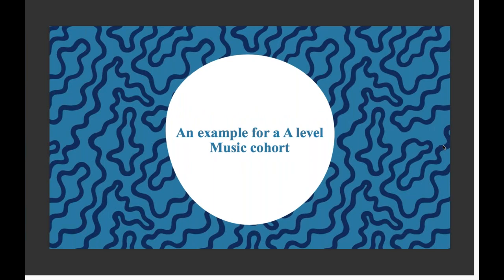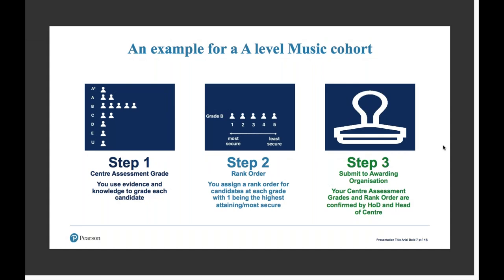We will now look at the process in the context of A-Level Music. The first thing to do is use the evidence and your professional judgement to give a centre assessment grade to each student. Once this is done, you will assign a rank order within each grade. In the example here, we have five candidates awarded a grade B. The candidate ranked one is the most secure candidate, moving down to number five who is the least secure. This is then approved by your head of department and head of centre and submitted to the awarding organisation. There is a fourth step — the statistical standardisation process to finalise the grades — with the intention to issue grades in July 2020.